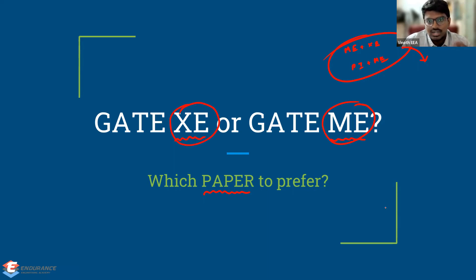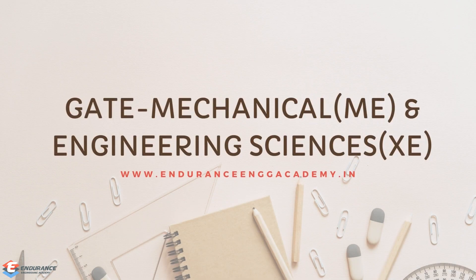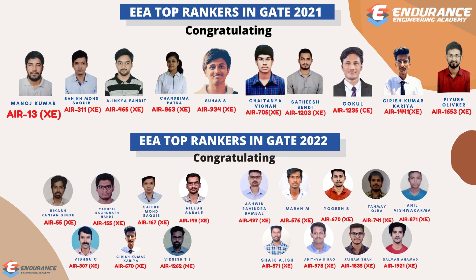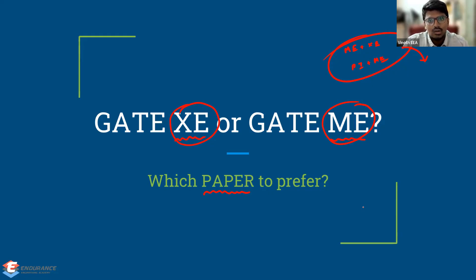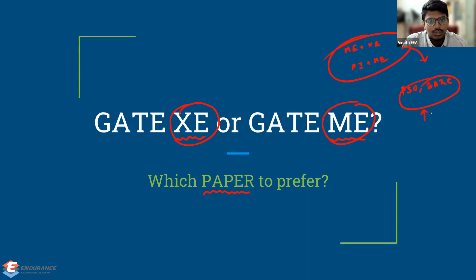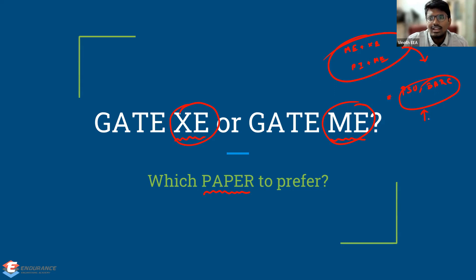So that is what we're going to go through in this video. First of all, which is your final aim? Whether you are planning for a public sector job — maybe BARC, ISRO, state-level exams, anything related to a job and not a master's degree — then there is no other doubt: go for ME. Give your complete preference to ME and keep XC as a side preference. Focus completely on ME; there is no dilemma.